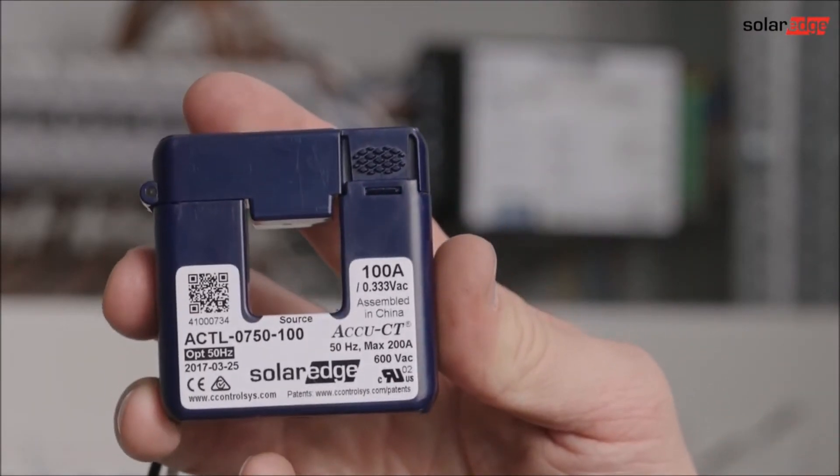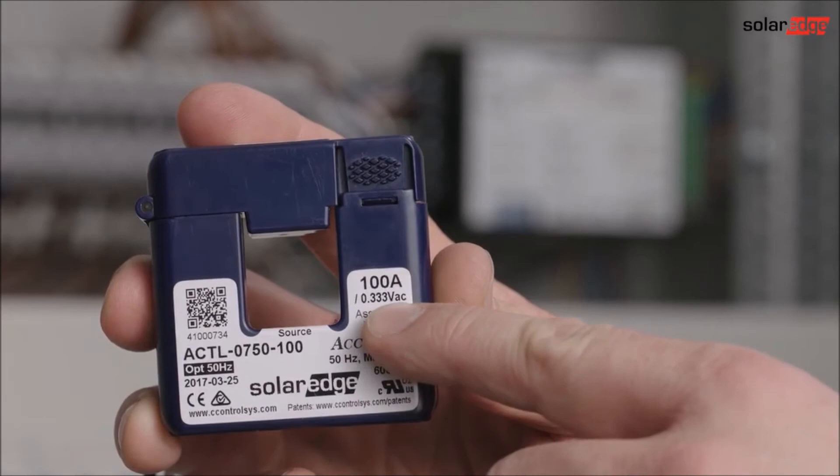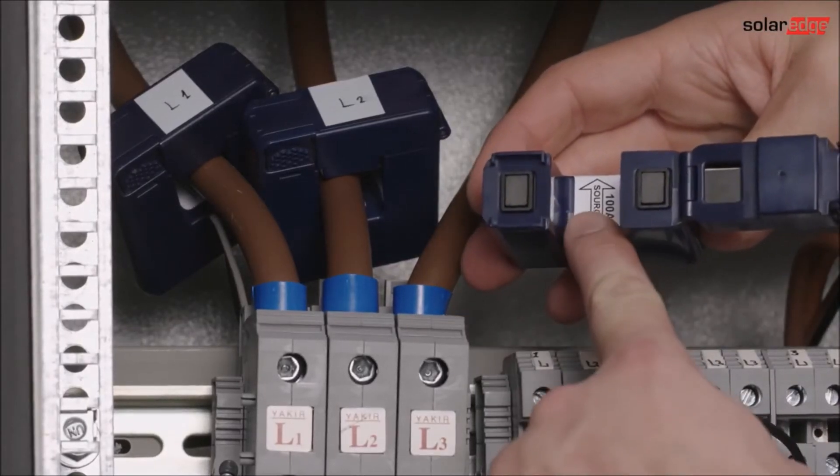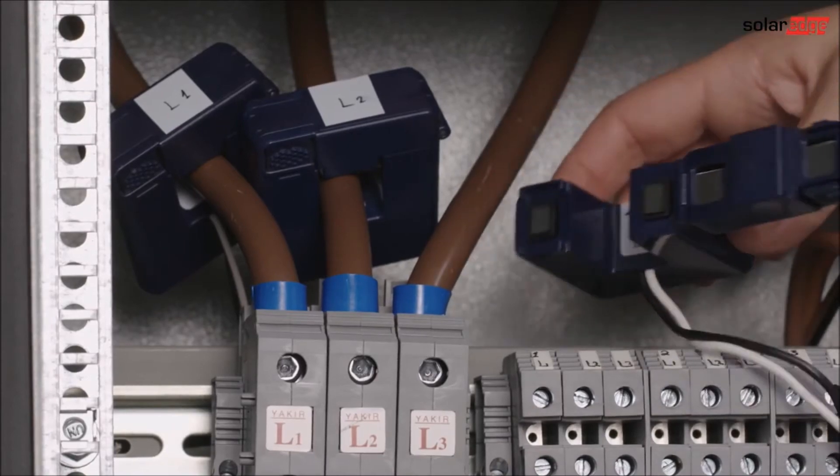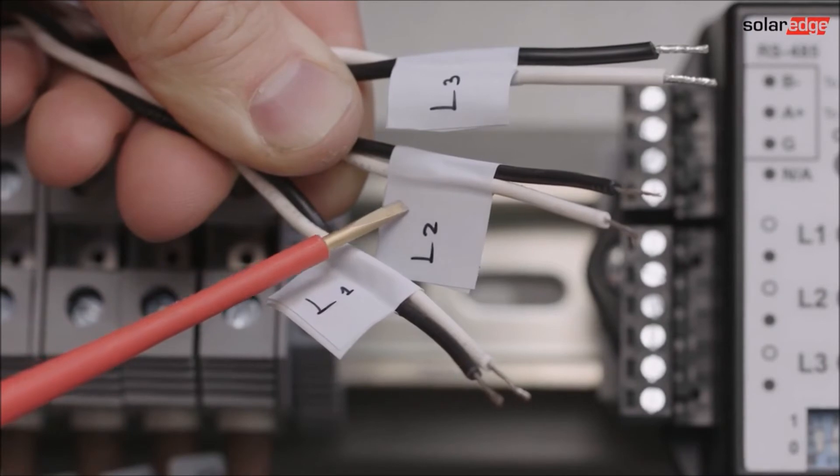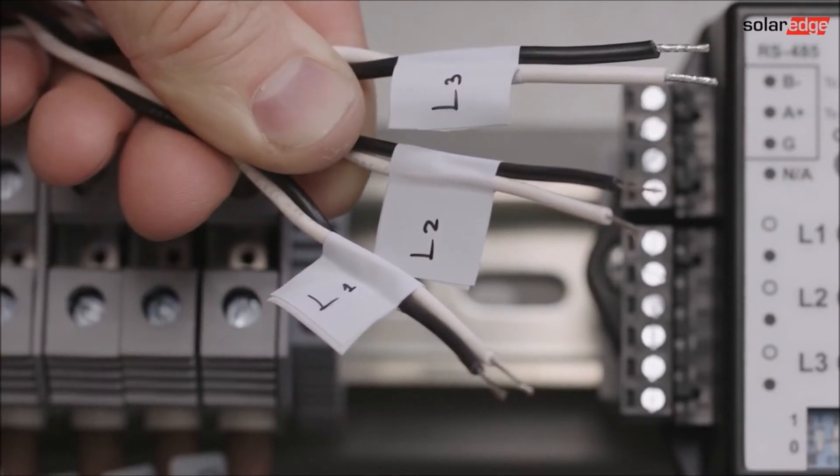Let's continue with the CTs. Each CT clamps around one of the main power supplies phase wires. They should be installed at the grid connection point and the arrow on the CT should point toward the grid connection. Make sure to keep the CTs in the same order as the AC wires. L1CT to L1 phase and so on.